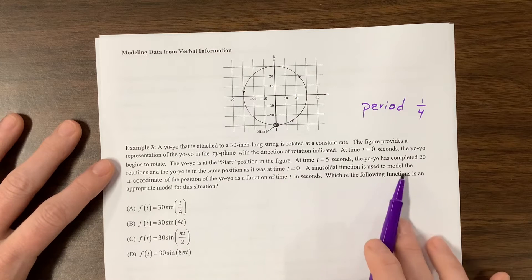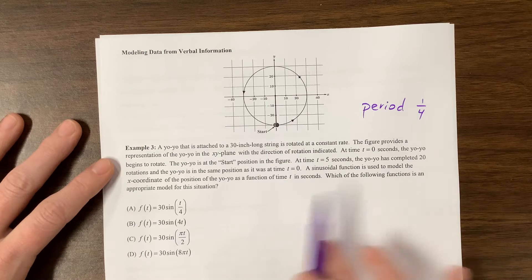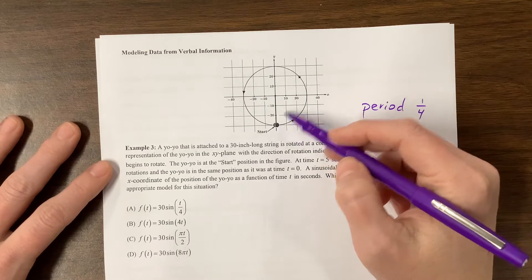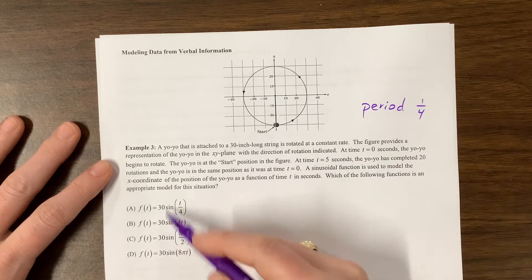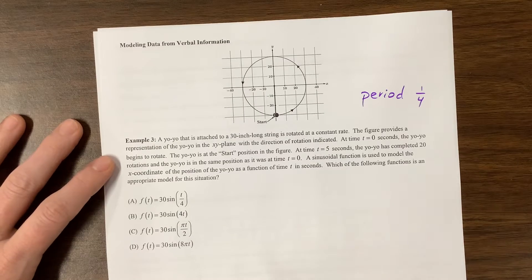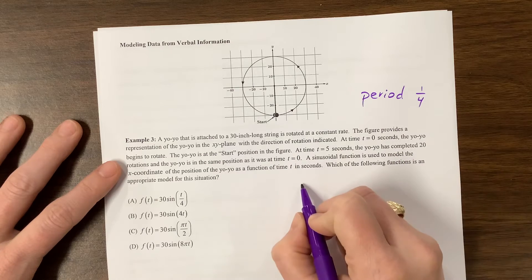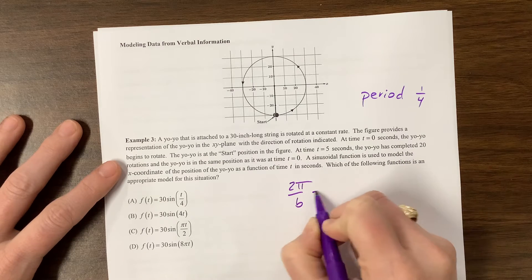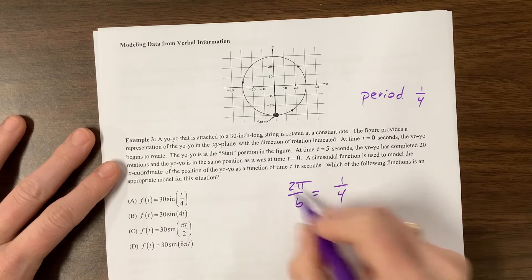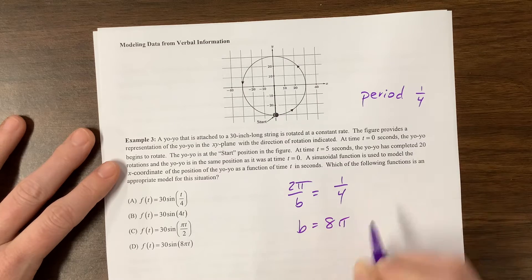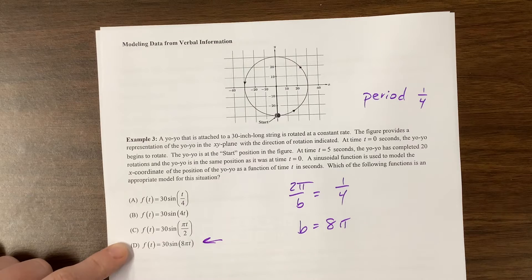The sinusoidal function is used to model the x-coordinate as a function of time in seconds, which of the following functions is an appropriate model. It looks like we've got the radius of this circle is 30, which tells me that my amplitude is 30. Our period is two pi over b, but our period is equal to one-fourth. If I cross multiply, b is equal to eight pi. And so, the only one that gave me that option is this right here.